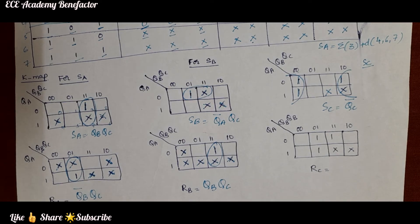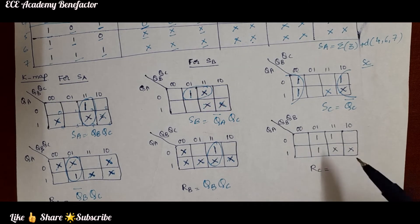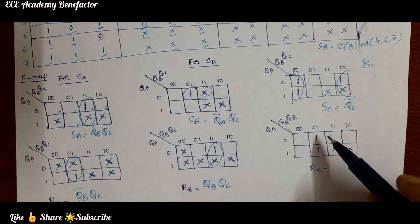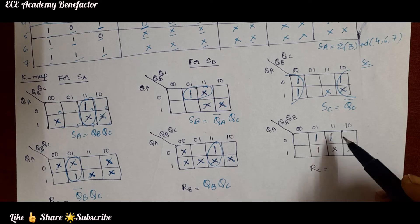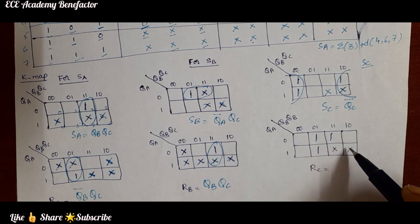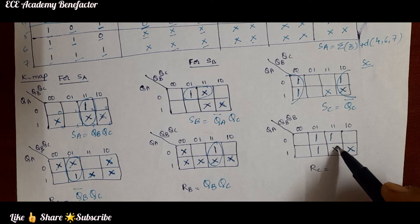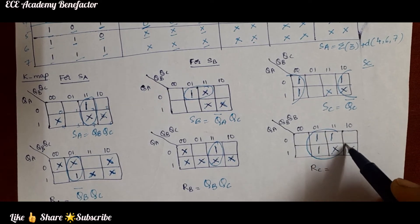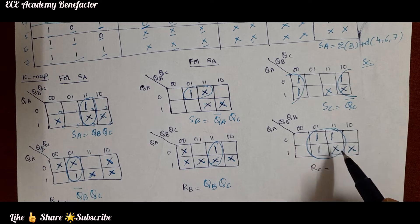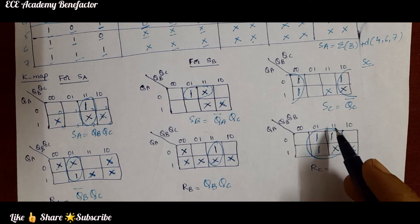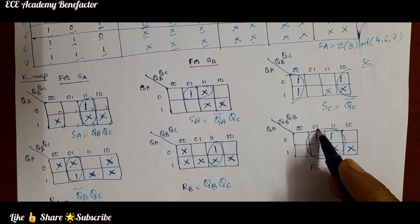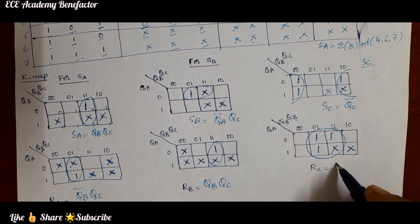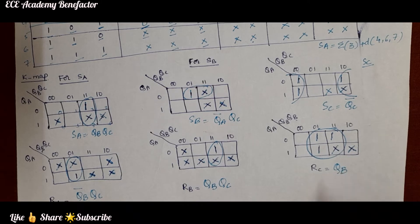Coming to RC: it is 1 at states 1, 3, and 5. We form a quad, and in this quad QB=1 is common, so RC simplifies to QB. We have now simplified all 6 K-maps: SA, RA, SB, RB, SC, RC.